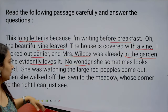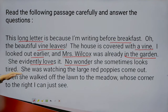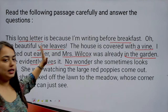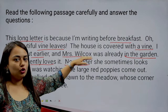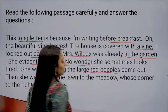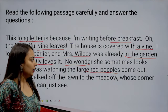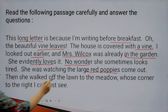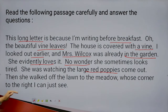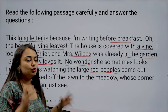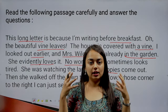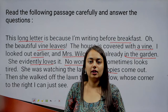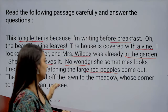'She was watching the large red poppies come out.' Our narrator observes that Mrs. Wilcox is noticing the red poppies — a type of flower — as they are blooming. 'Then she walked off the lawn to the meadow, whose corner to the right I can just see.' Through the narrator's perspective, she narrates what Mrs. Wilcox has been doing — first noticing red poppies, then going to the meadow, which is a green patch.